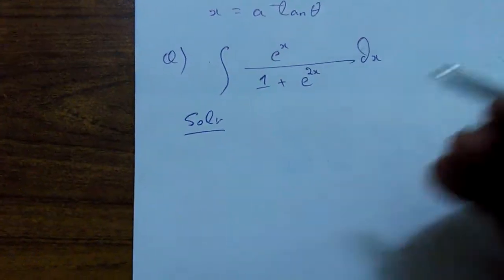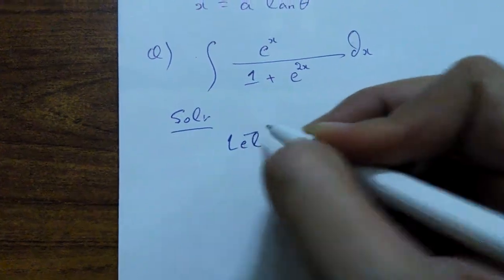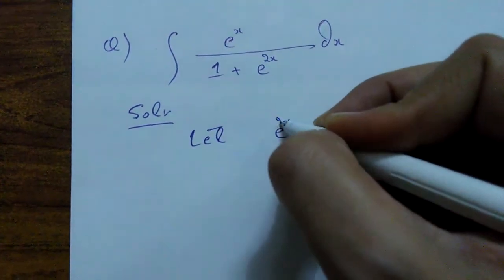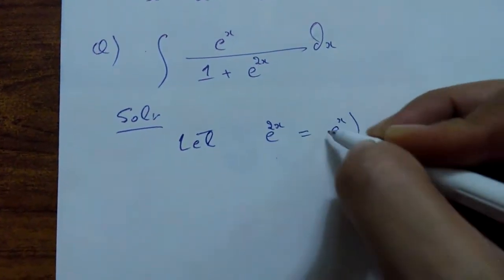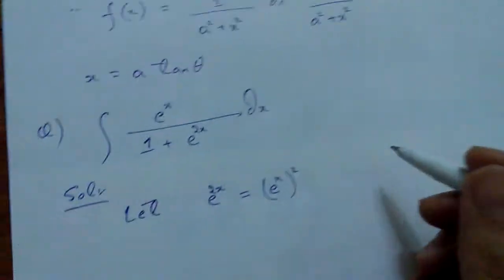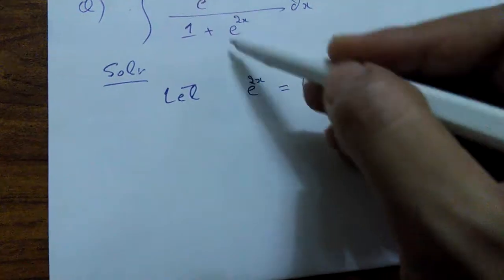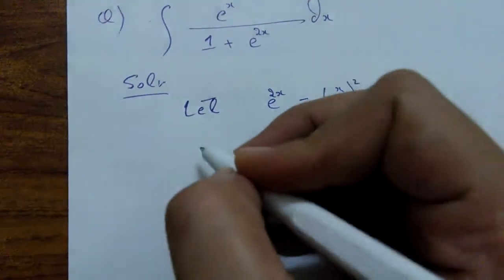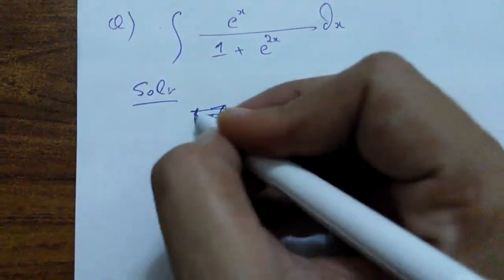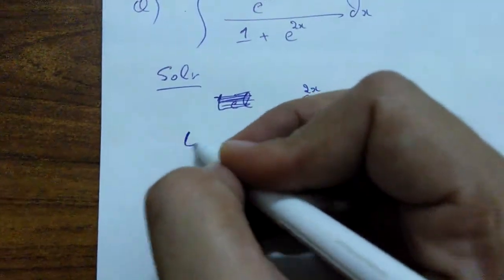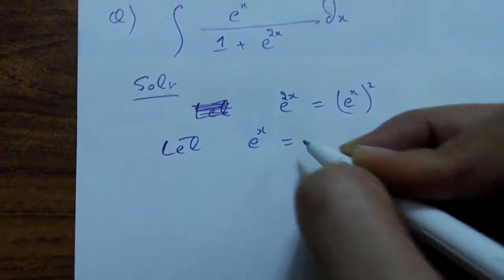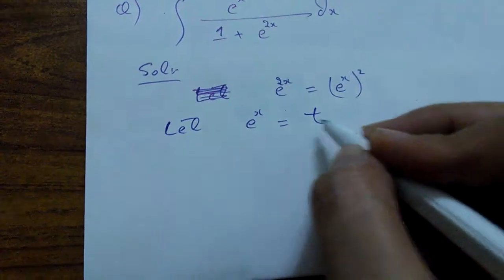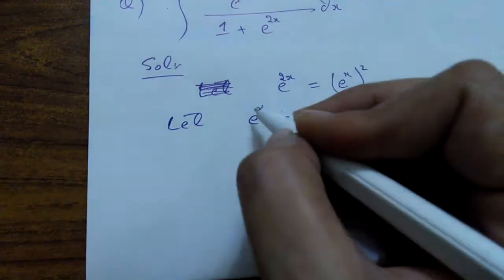First of all, let us assume that e to the power 2x can be written as (e^x) squared. So let me substitute e^x as a new variable t. Differentiating both sides with respect to x, we differentiate e^x with respect to x.